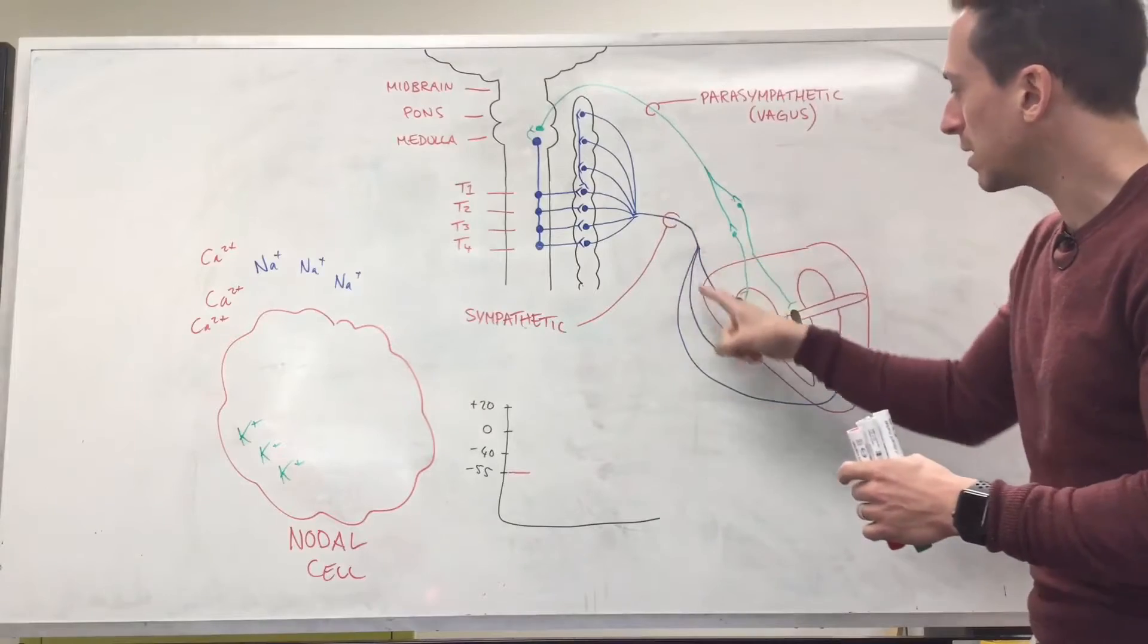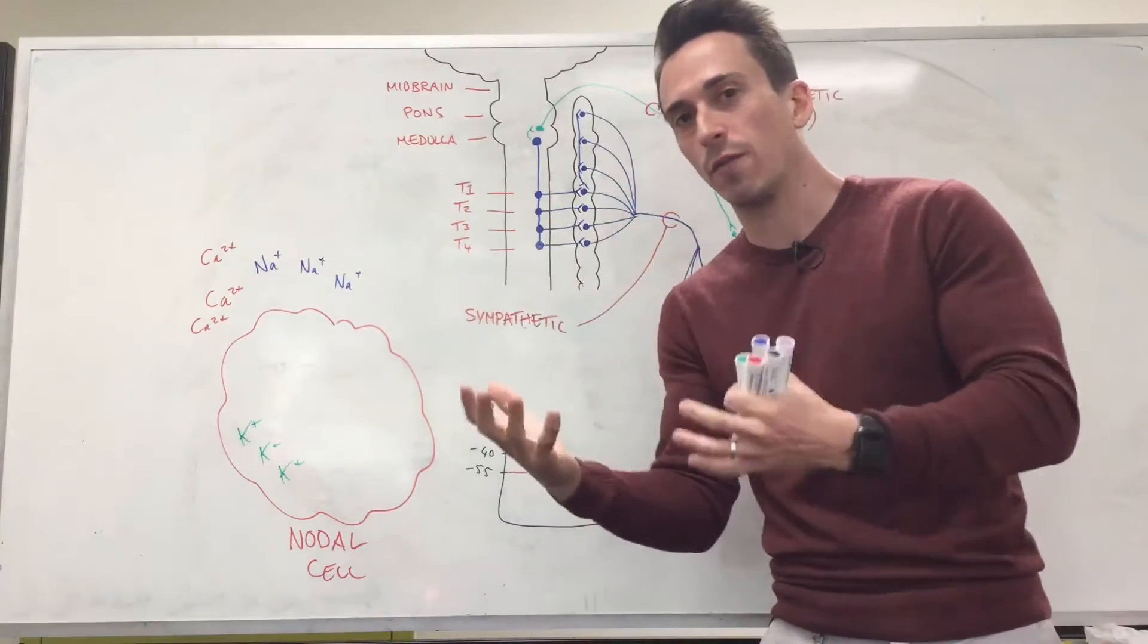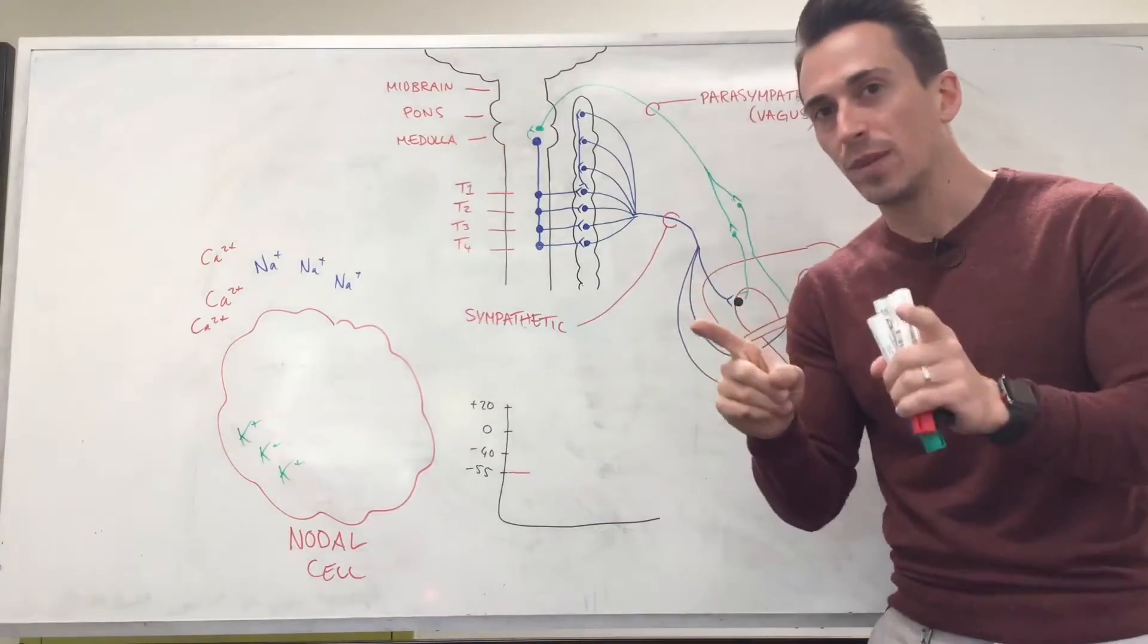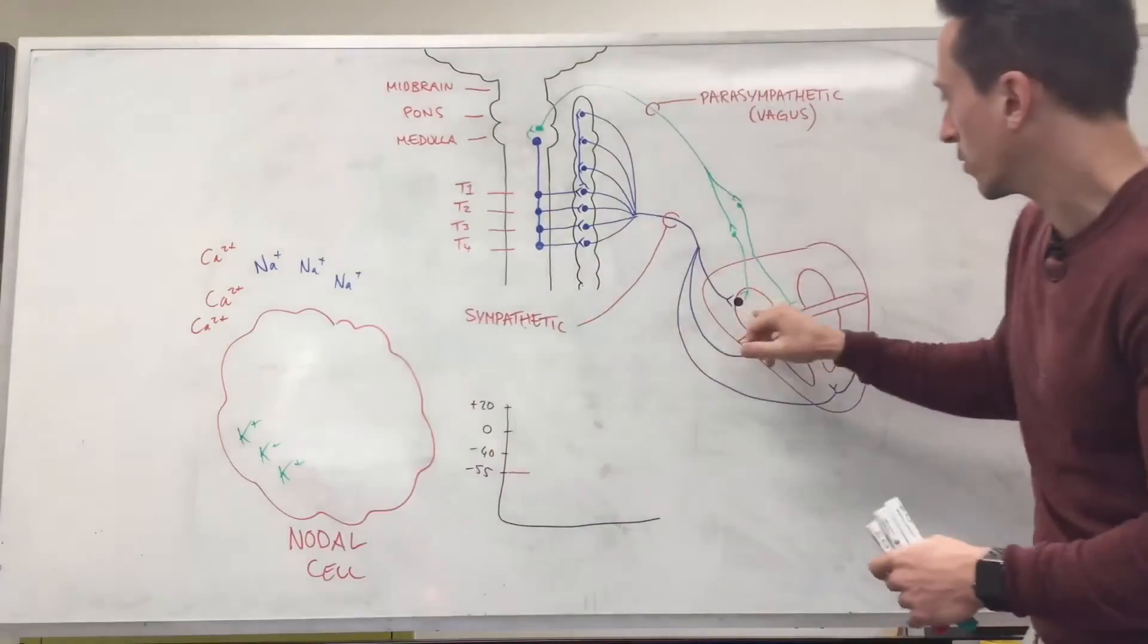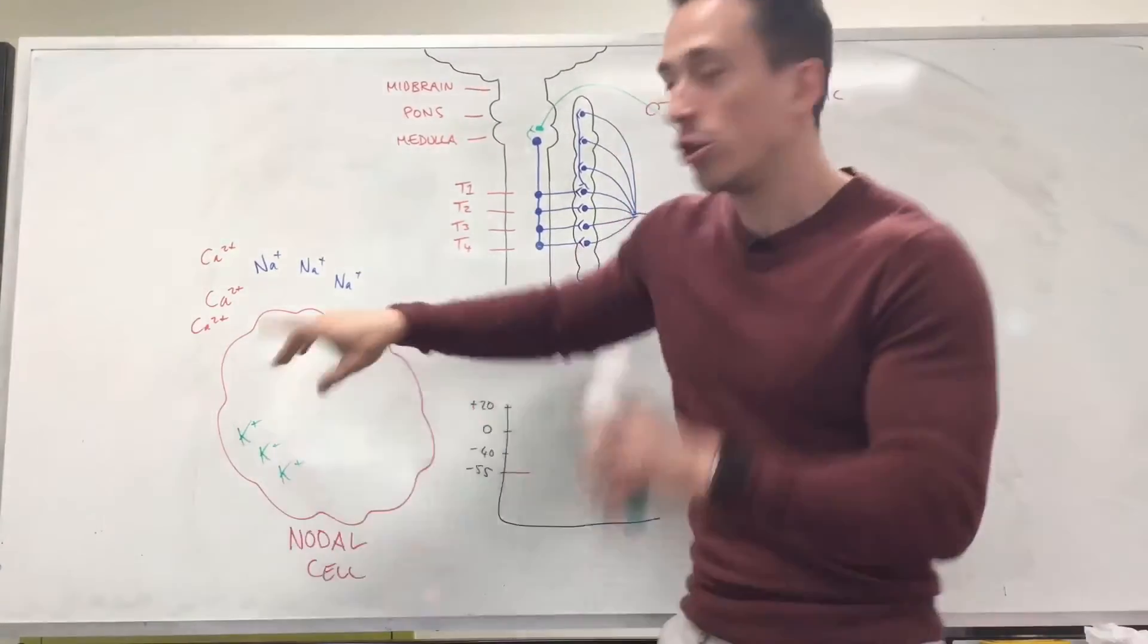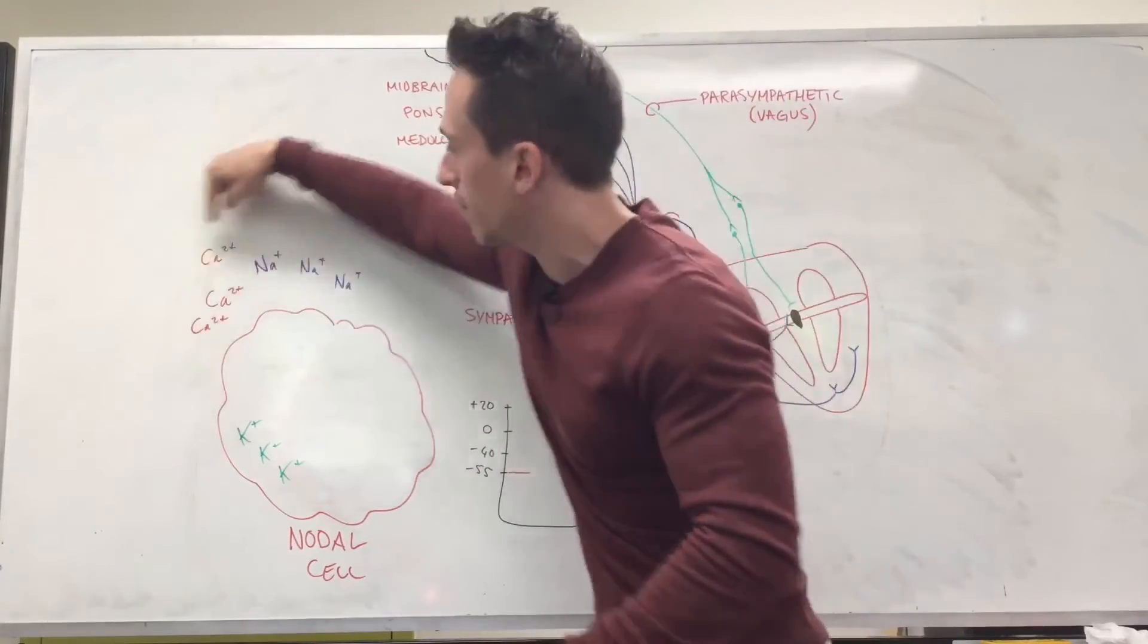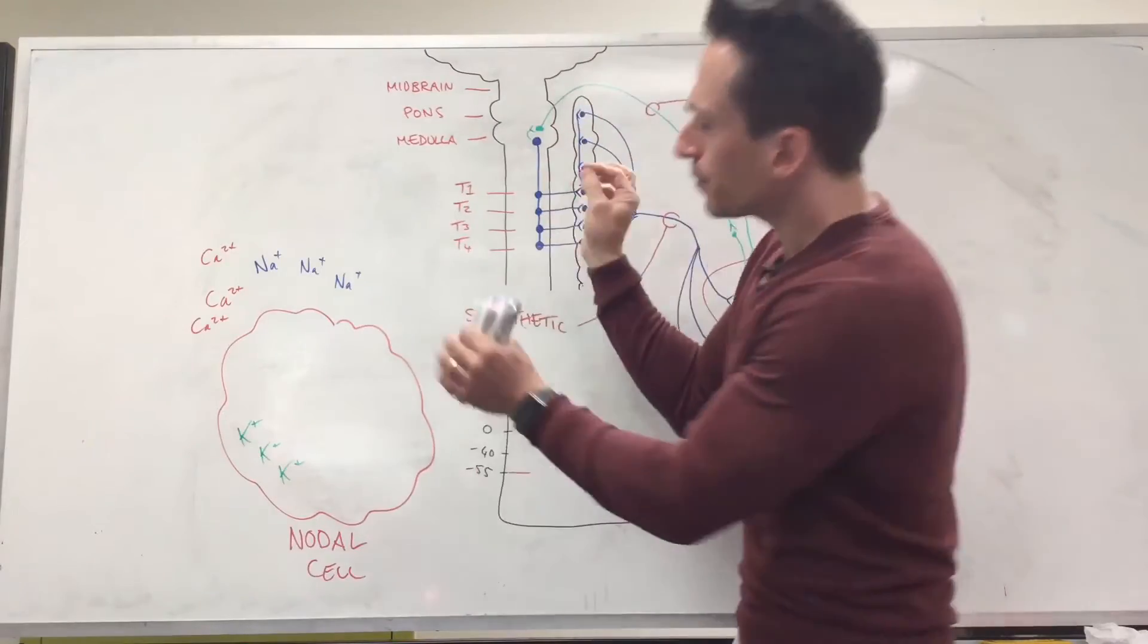The sympathetic nervous system when it sends a signal down will release noradrenaline or norepinephrine if you're in the States. This is the cell of these nodal cells—SA node or AV node. You know already that there's heaps of sodium outside the cell, heaps of calcium outside the cell, and heaps of potassium inside the cell.